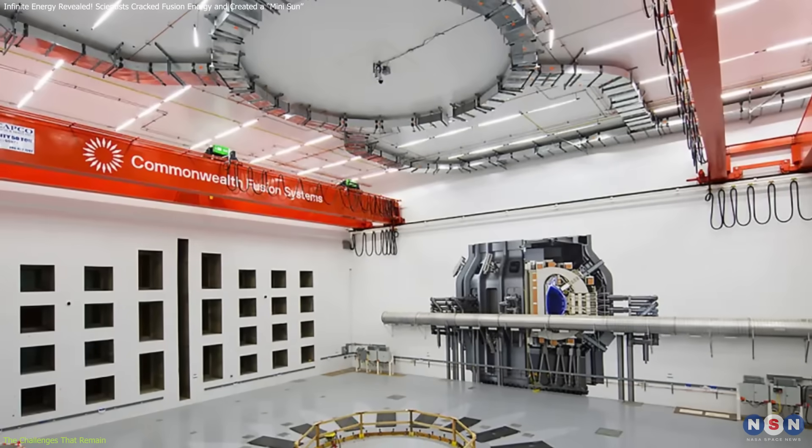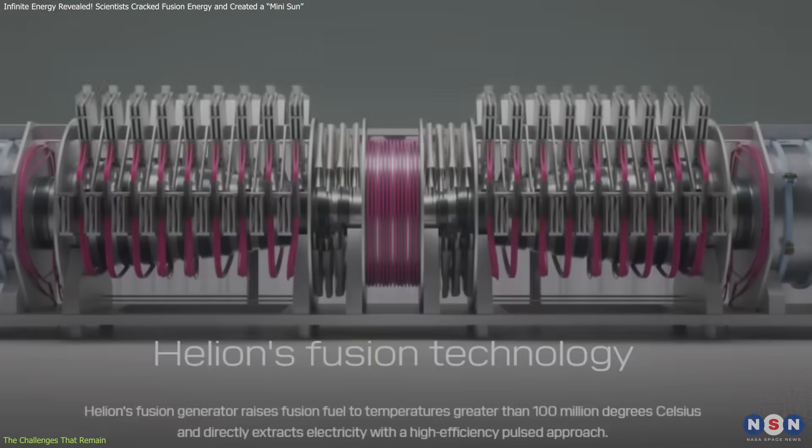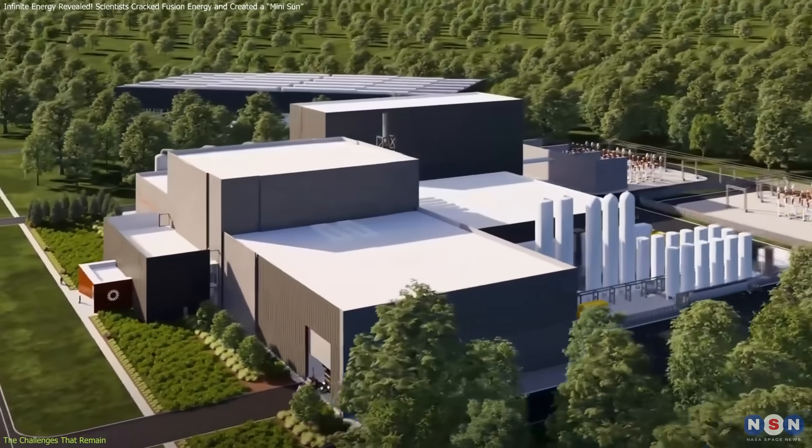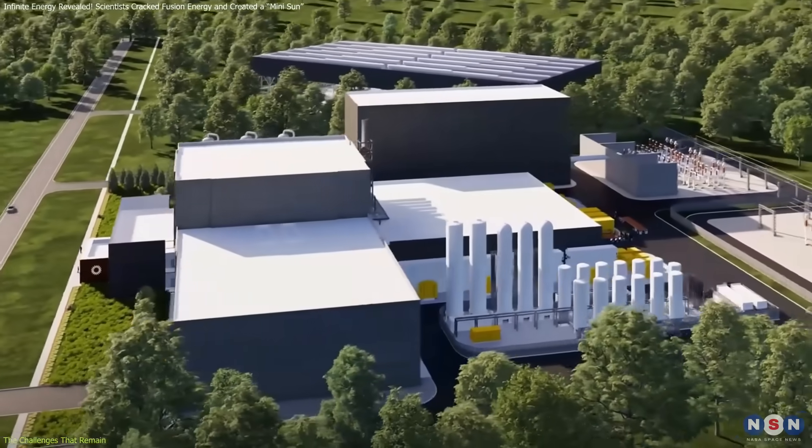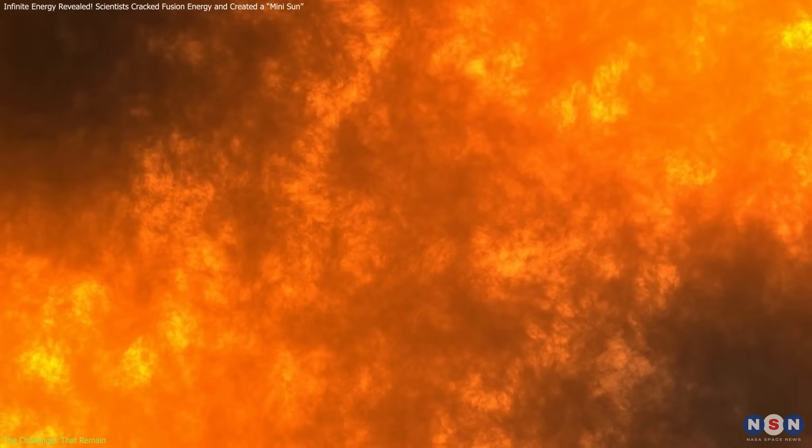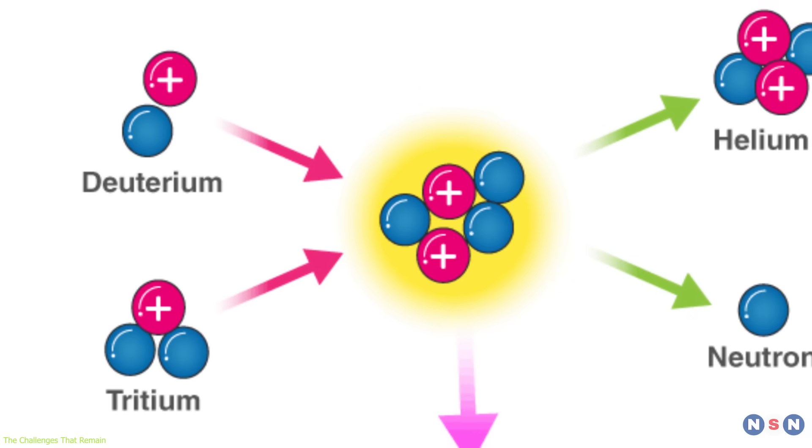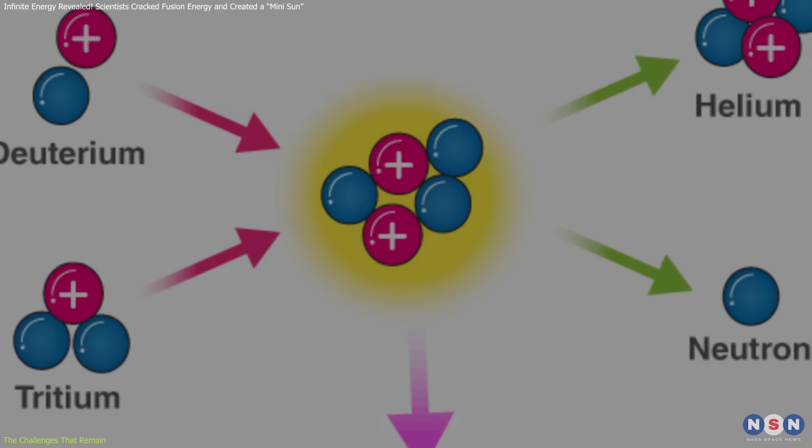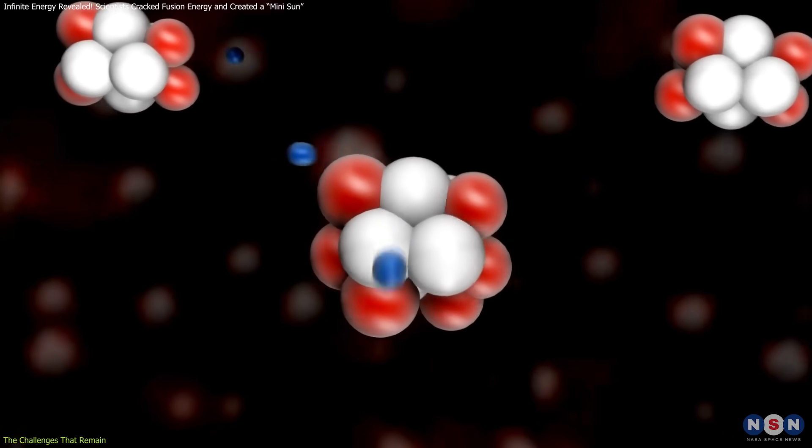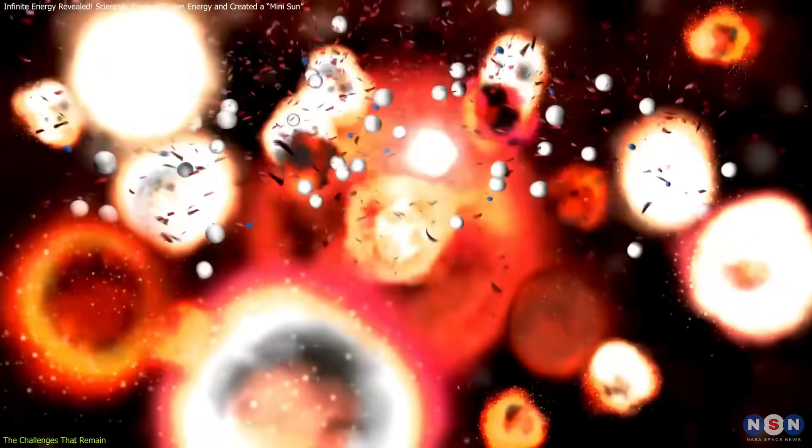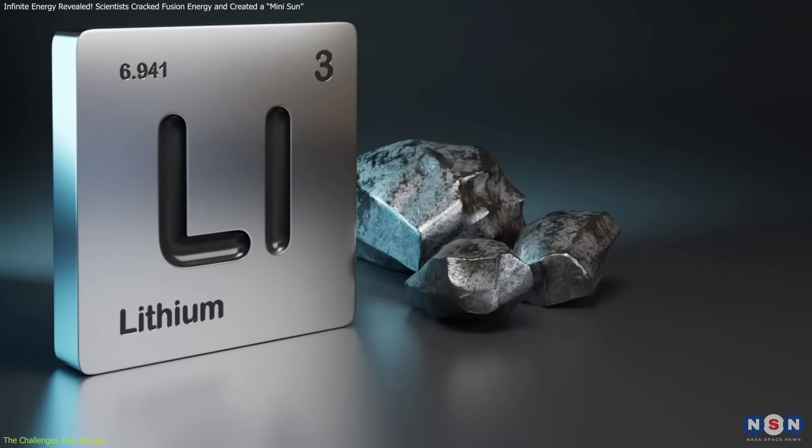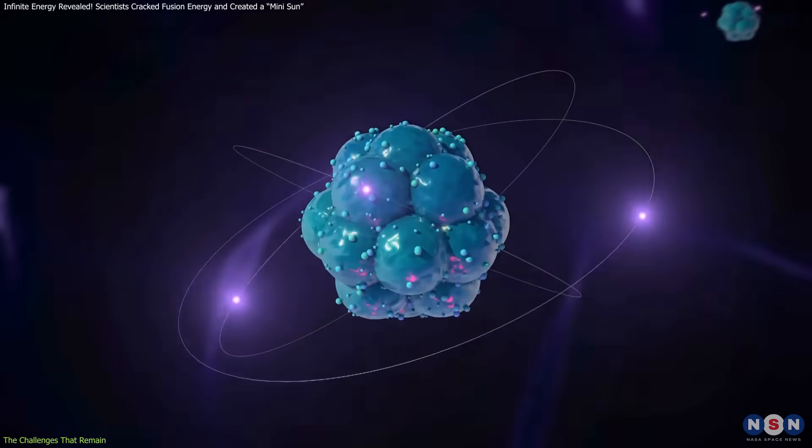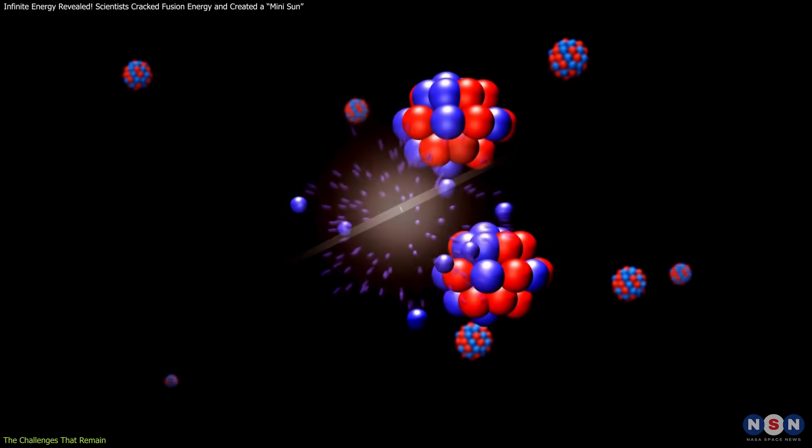But some private companies, like Commonwealth Fusion Systems and Helion Energy, believe they can build working fusion power plants even sooner by the 2030s. One of the biggest challenges is fuel production. While deuterium is abundant, tritium is extremely rare. To solve this, fusion reactors must create their own tritium supply. The solution lies in lithium. When neutrons from the fusion reaction hit lithium, they cause it to split and produce tritium.